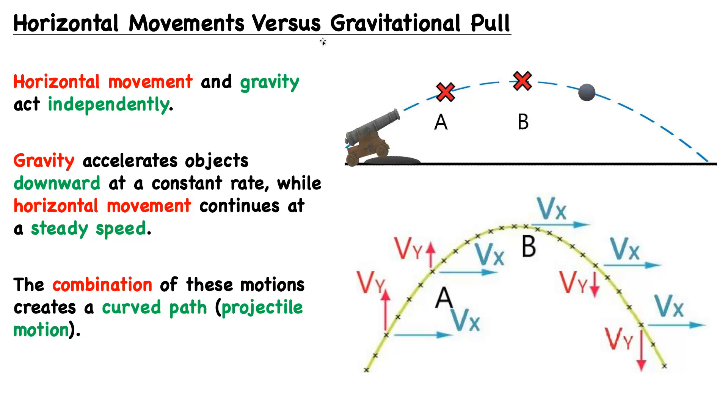Then, as it begins to fall downwards rather than travel upwards, that y component will increase as gravity accelerates the object downwards. But the key takeaway is that horizontal movement and gravity act independently. The horizontal component, the horizontal motion, will not be affected only in the vertical.